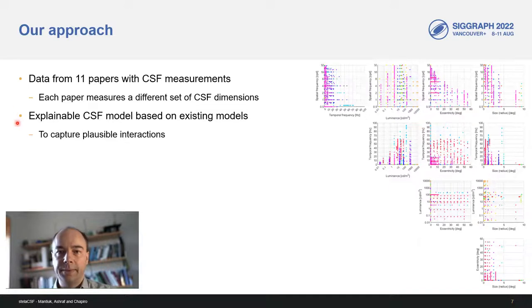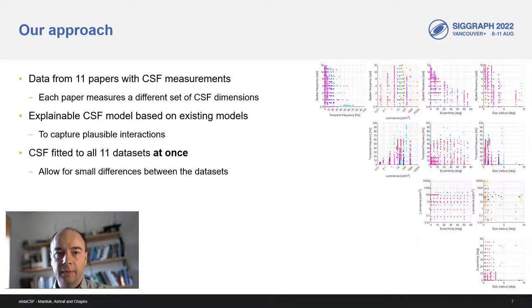Having the data, we built an explainable CSF model built on top of existing psychophysical models. This is to make sure that we capture plausible interactions rather than just fit curves. One major distinction is that our model was fitted to all 11 datasets at the same time, so that the same model can explain all those datasets. We did, however, allow for small differences between the datasets, mainly because each dataset was measured with a slightly different procedure.